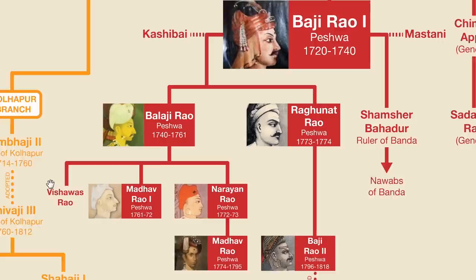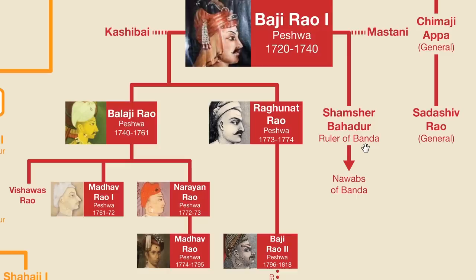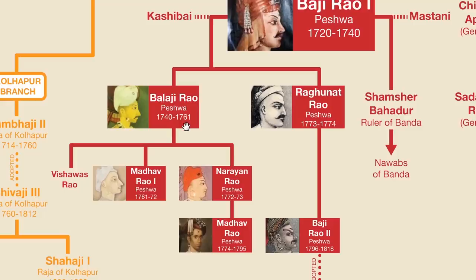The dead included the Peshwa's eldest son and heir Vishwas Rao, commander of the Maratha forces Sadashiv Rao, Baji Rao's son Shamsher Bahadur who had become ruler of Banda, as well as the leaders of both Baroda and Gwalior. Balaji Rao himself died a few months after this devastating battle, but the Marathas rebounded under Balaji Rao's second son Madhav Rao and the leaders of the various Maratha states. By this point, the Maratha Empire was actually more of a confederacy of states, sometimes referred to as the Maratha Confederacy. During the confederacy stage, the Peshwas — who had already replaced a pretty much useless hereditary dynasty — ended up becoming a pretty much useless hereditary dynasty themselves.